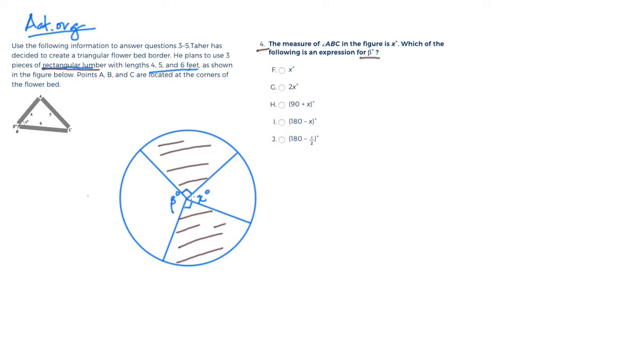Because when you have a piece of rectangular wood, it makes a 90-degree angle here. When you have this rectangular piece, by definition, a rectangle is going to have four 90-degree angles.